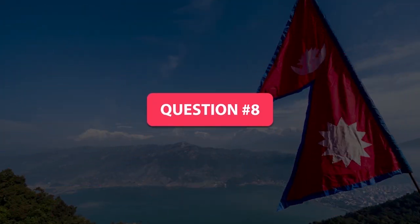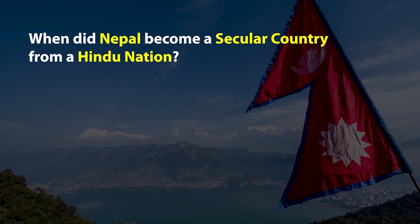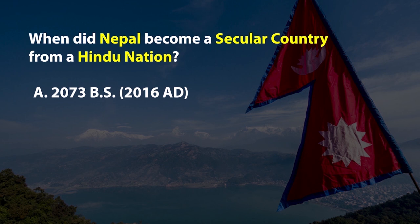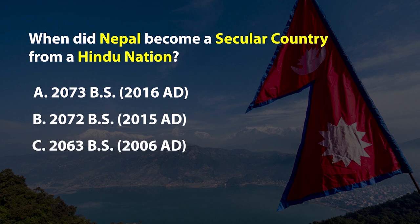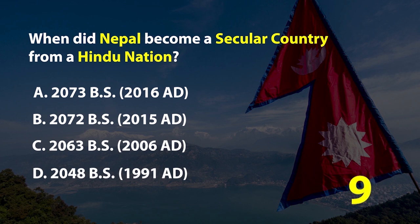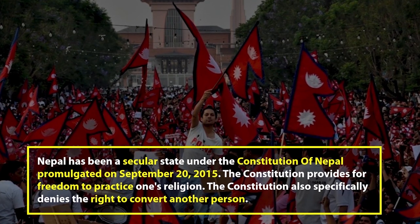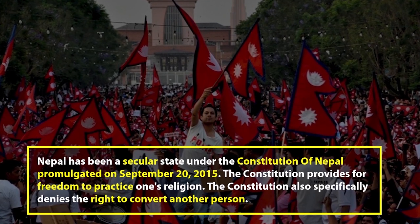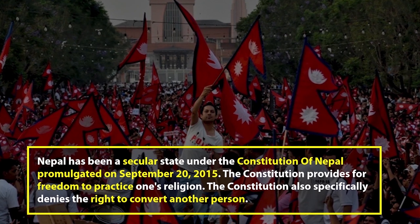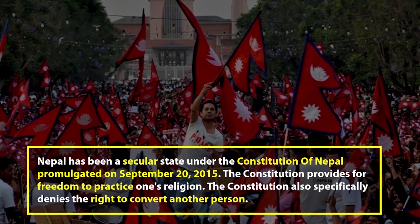Question number 8. When did Nepal become a secular country from a Hindu nation? A. Bikram Sambat 2073, B. Bikram Sambat 2072, C. Bikram Sambat 2063, or D. Bikram Sambat 2048. The right answer is B. Bikram Sambat 2072. Nepal has been a secular state under the constitution promulgated on September 28, 2015. The constitution provides for freedom to practice one's religion, but specifically denies the right to convert another person.